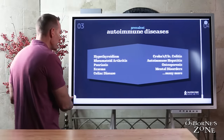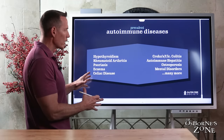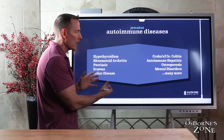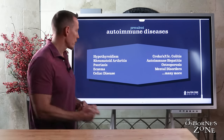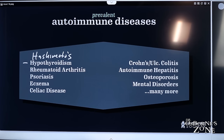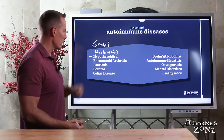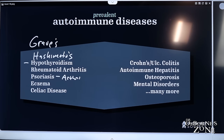These two trends correlate with the increase in autoimmune disease. Before diving into that, let's talk about a few of these autoimmune diseases in case you're not familiar with the term, or maybe you've been given one of these diagnoses and your doctor never mentioned they are autoimmune conditions. These include hypothyroid, also called Hashimoto's disease, and hyperthyroid called Graves' disease. There's also rheumatoid arthritis, psoriasis, psoriatic arthritis, eczema, and celiac disease.